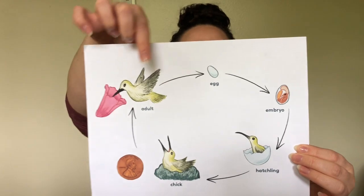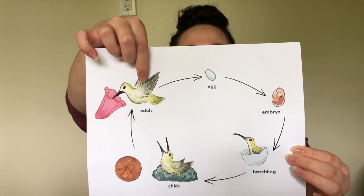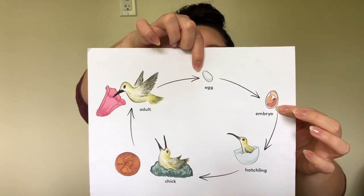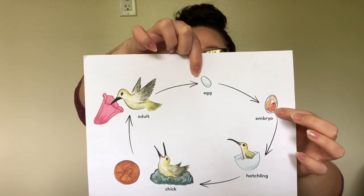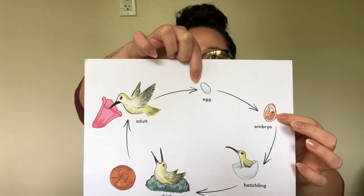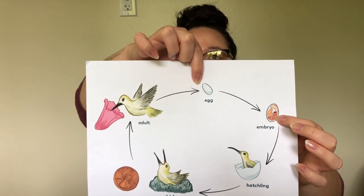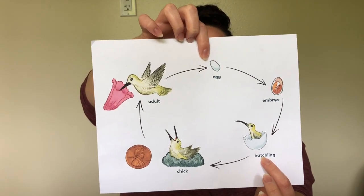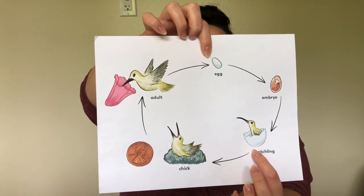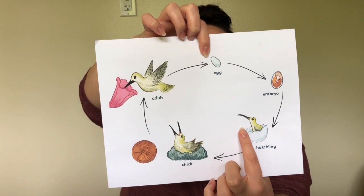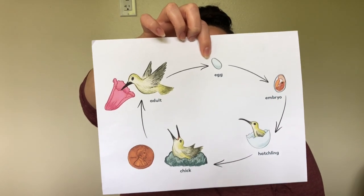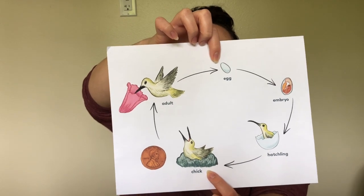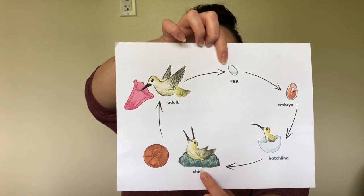You can see here there's the adult, and the adult female will lay the egg. Here's the egg. The egg will sit in the nest and start to form a baby hummingbird inside — this is the embryo stage. Once it's ready to hatch, it will become a hatchling, and the egg will break open with that beak the hummingbird is born with.